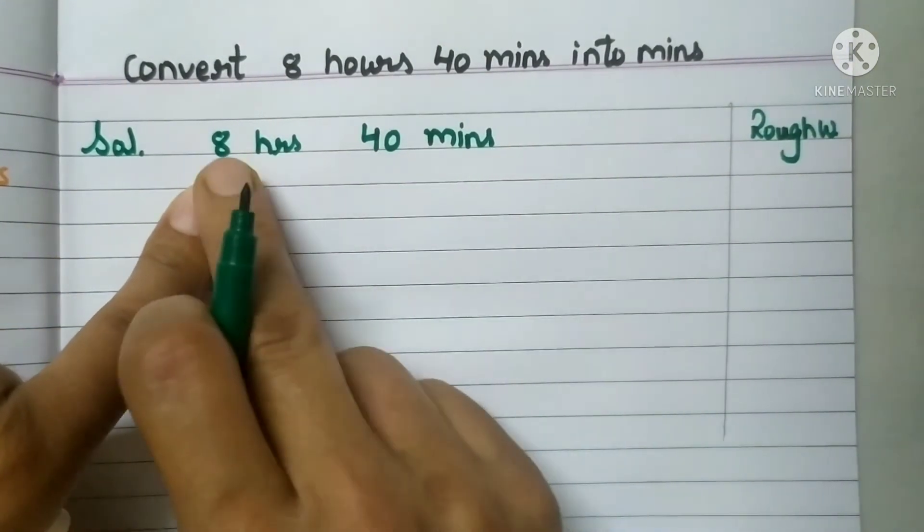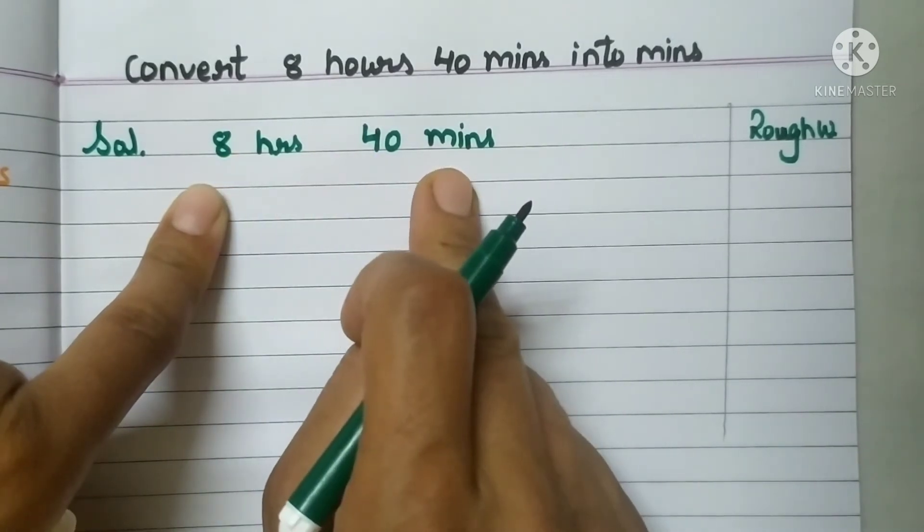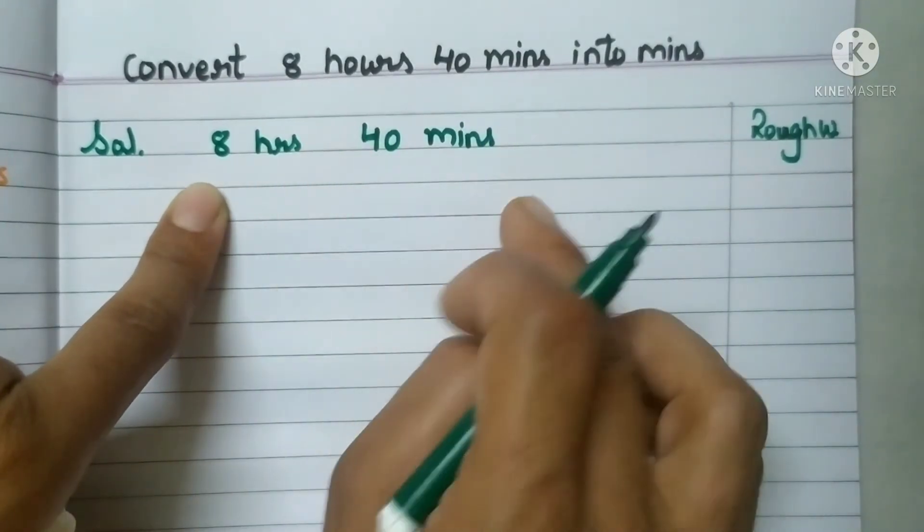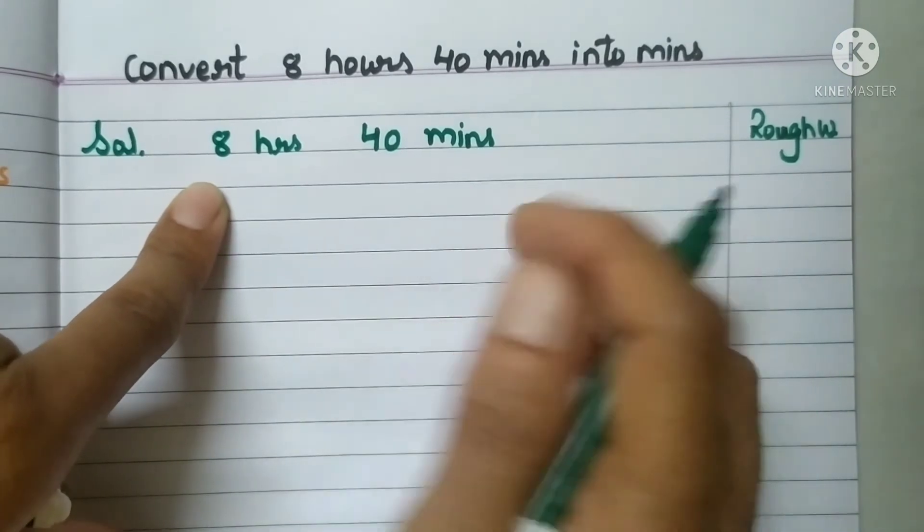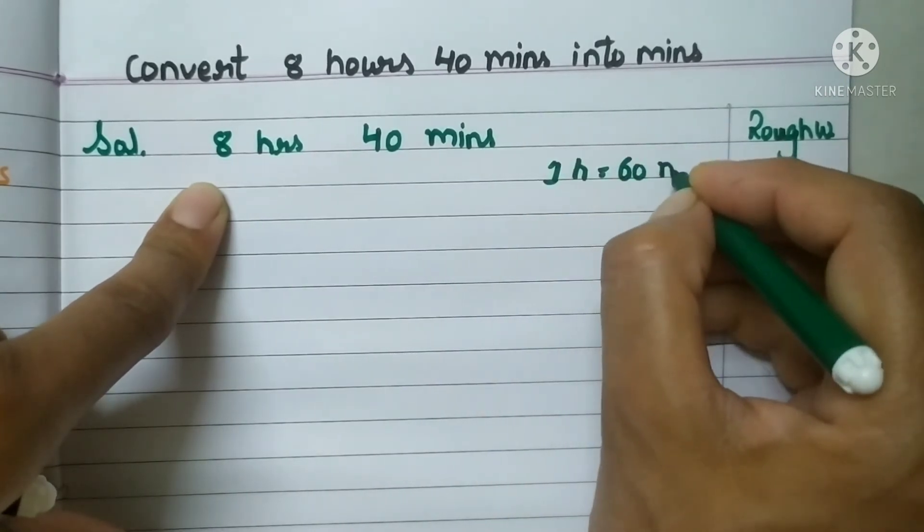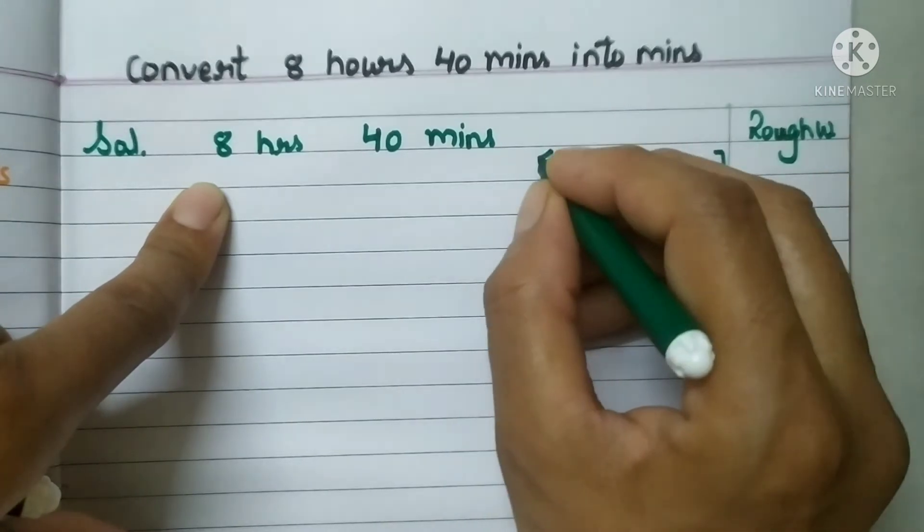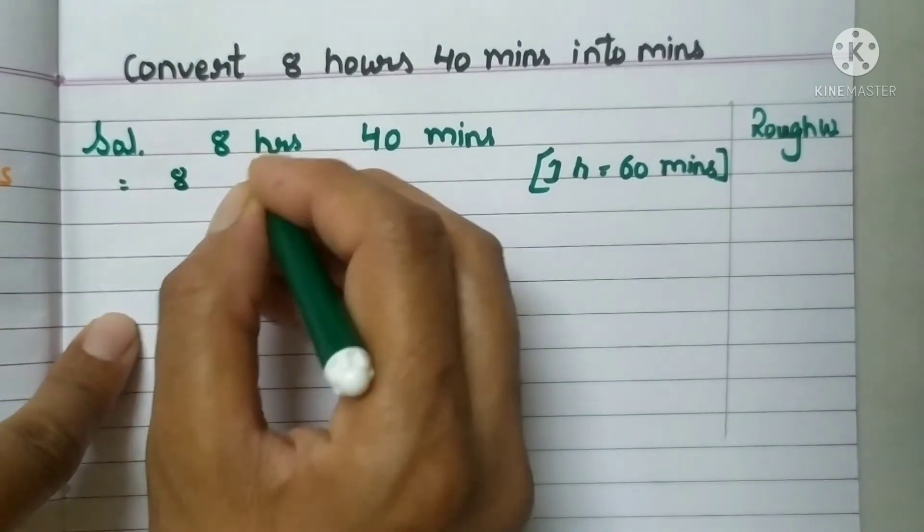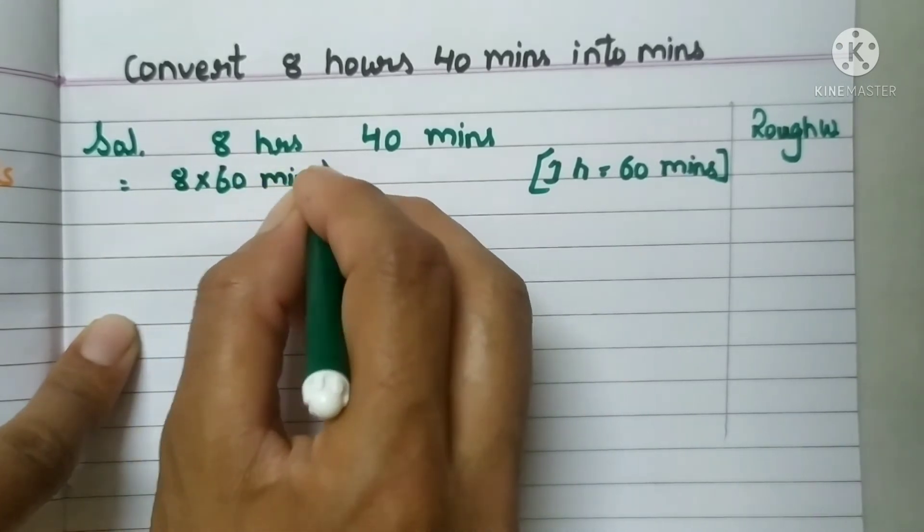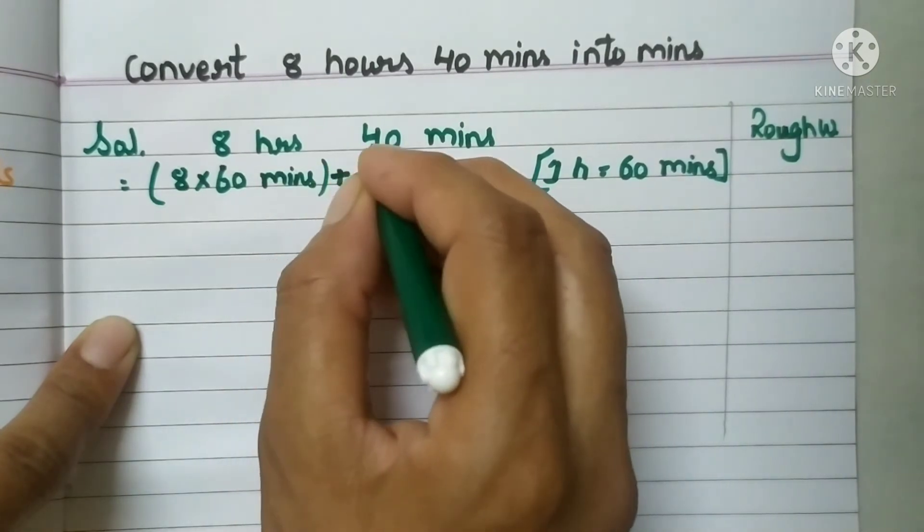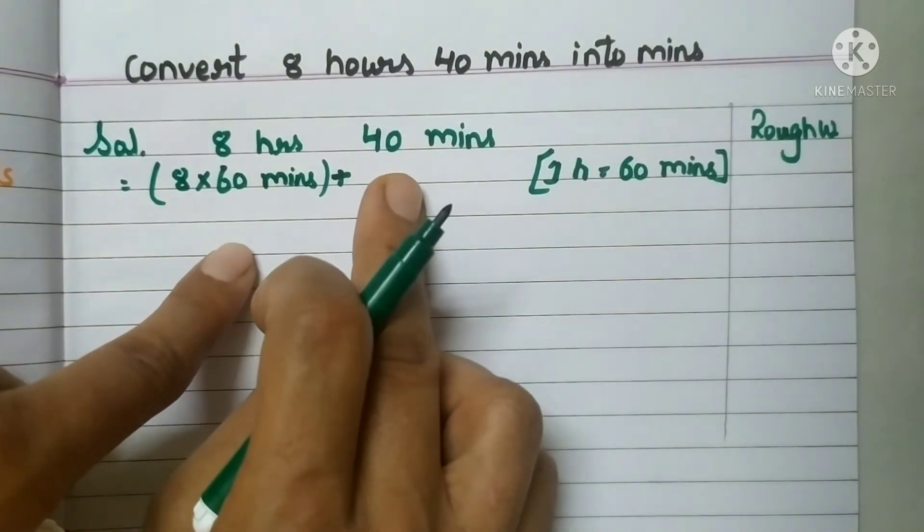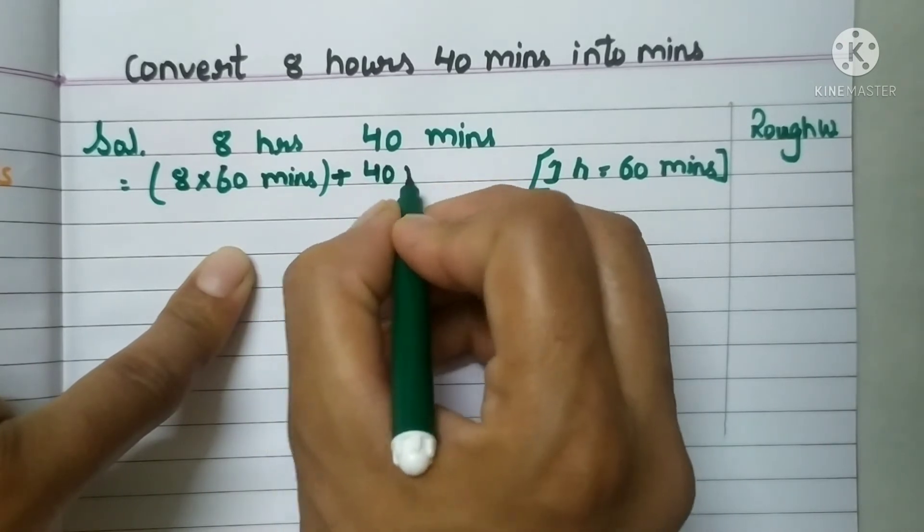Now there are two numbers, one is in hours and another one is in minutes. So minutes we cannot again convert into minutes. Isn't it? So we have to convert hours. And how we can convert hours into minutes? We know that 1 hour equals to how many minutes? 60 minutes. So we have to follow this formula. Instead of 8 hours I will write multiply 60 minutes. I will put this in bracket. Then I will add because this is one figure and this is another. This is 8 hours measurement, and I have to add 40 minutes also. So I will put 40 minutes.